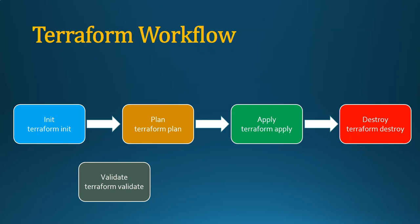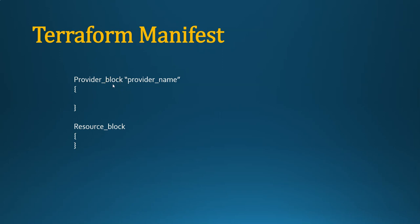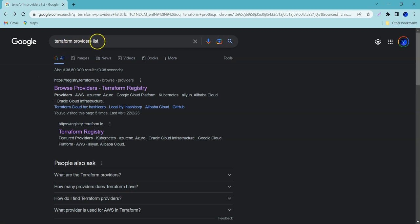These are the high-level commands. If you want to understand more deeply about these commands, please mention it in the comment section so I can create a new video. The Terraform manifest file has a skeleton or template with a provider block and a resource block. The provider block tells you the target environment or cloud you are provisioning infrastructure on, and the resource block tells you what resources you are going to create.